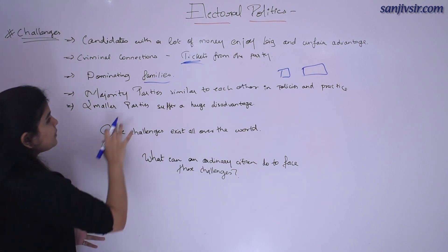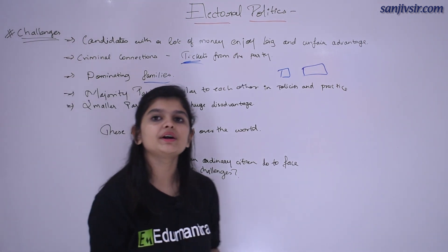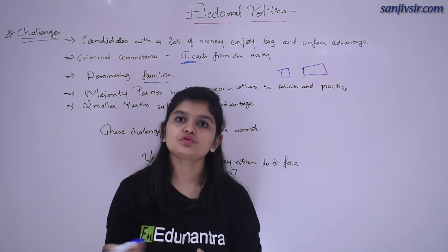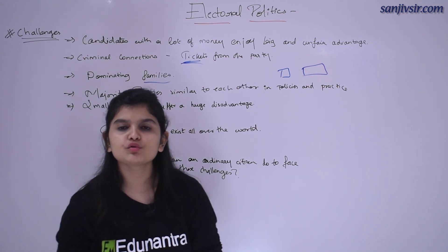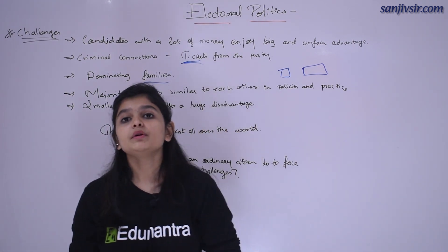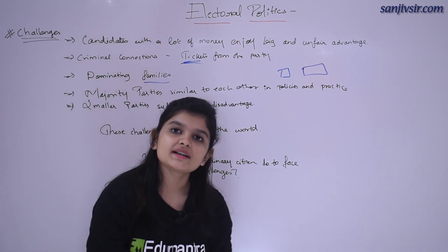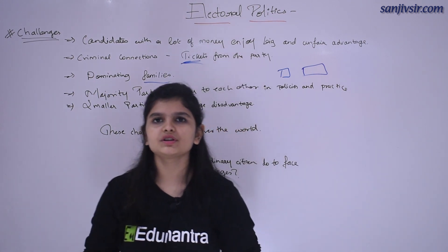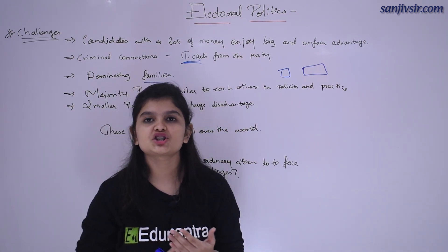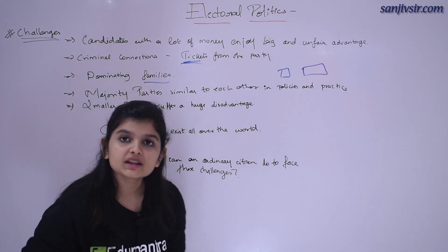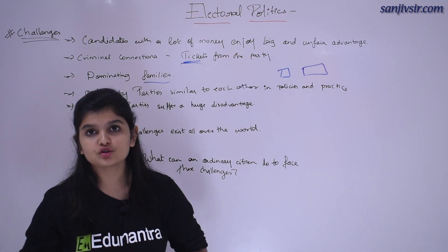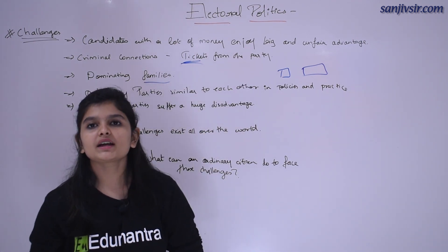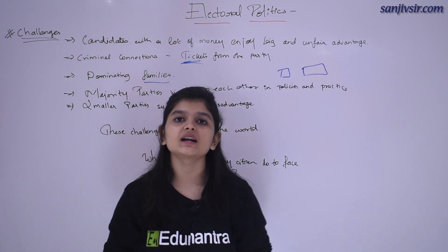Next: smaller parties suffer a huge disadvantage। जो बड़ी party है, पूरा country उसको जानता है — उसके बड़े-बड़े leaders पूरी दुनिया घूम चुके होते हैं, उनके पास popularity होती है, they are famous people, so people go and vote for their symbol। पर जो छोटे-छोटे parties होते हैं, उनके पास कई अच्छी policies रहती हैं पर जादा लोग उनको जानते नहीं — उनके पास ज़्यादा पैसे, resources और connections नहीं होते — तो इस वजह से उनको बहुत बड़ा disadvantage face करना पड़ता है।